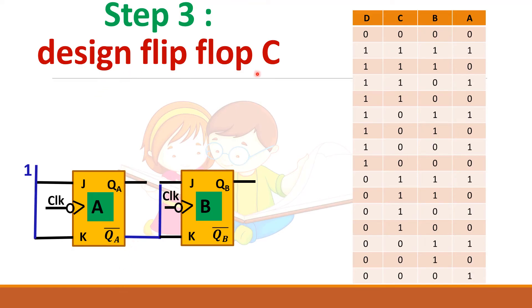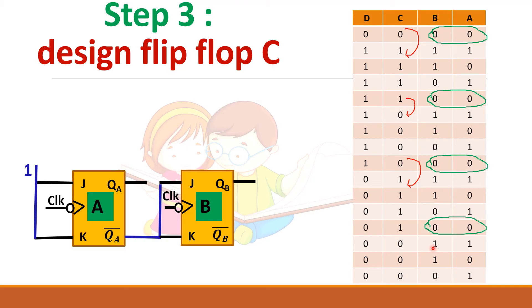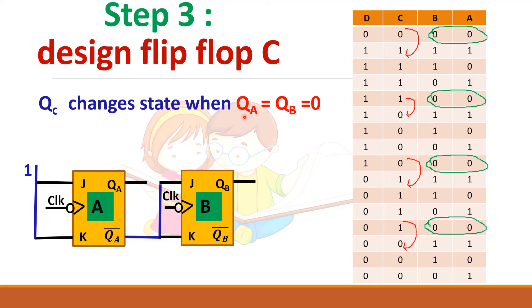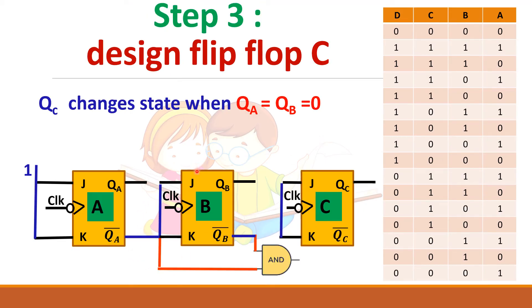Now let us design flip-flop C. QC changes its state when both QA and QB are 0. So we take QA bar and QB bar — when both are 1, it means QA and QB are 0. We AND these complements together and connect the result to the input of flip-flop C.